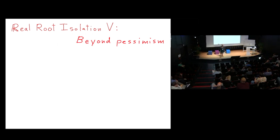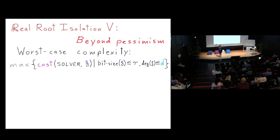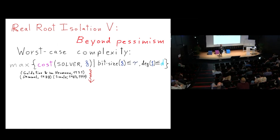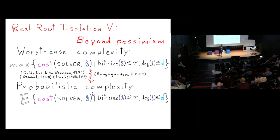To go beyond pessimism, we average out. This follows ideas of Goldstein and von Neumann when analyzing numerical algorithms for matrices, retaken by Demmel and Smail in numerical linear algebra, and more recently in the book by Rue Gardner, 'Beyond Worst Case Complexity'. We switch from worst-case (a maximum) to probabilistic complexity (an expectation). The more moments we can control, the better the probabilistic estimates.